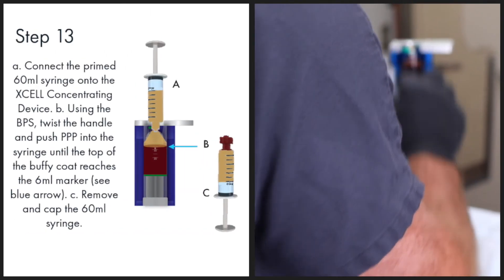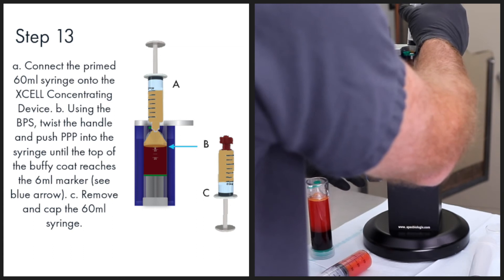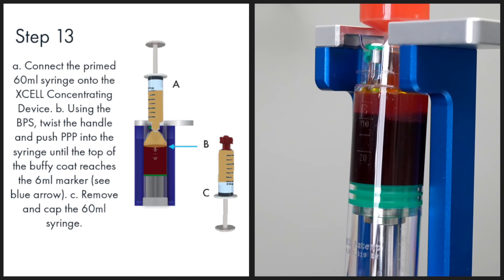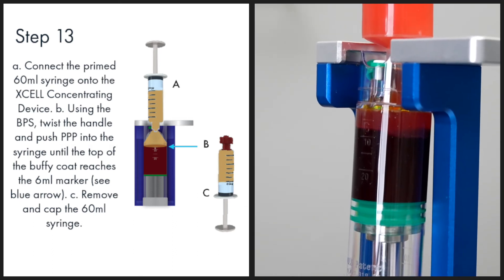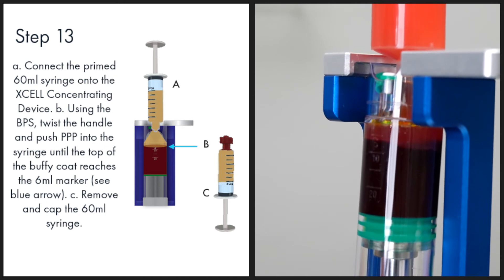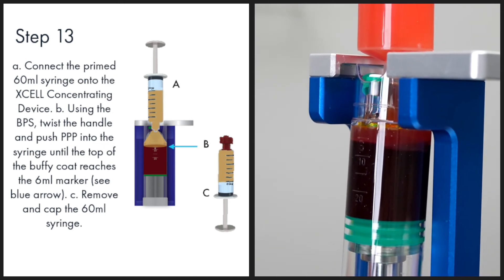Connect a primed 60 milliliter syringe onto the concentrating device. Using the benchtop press, twist the handle and push platelet poor plasma into the syringe until the top of the buffy coat reaches the 6 milliliter mark. Remove and cap the 60 milliliter syringe.